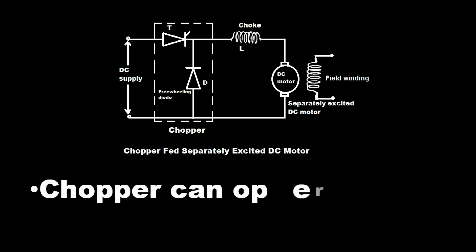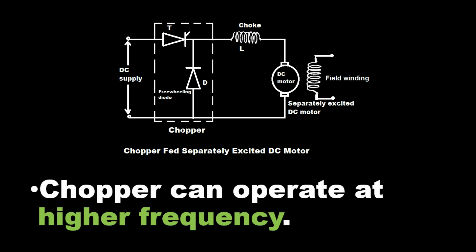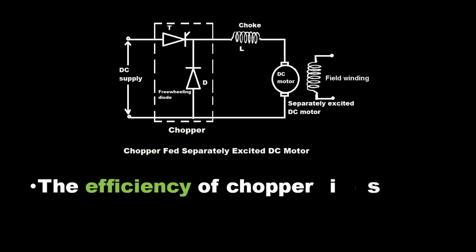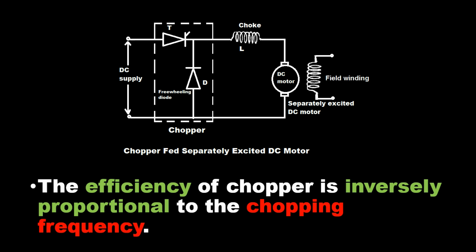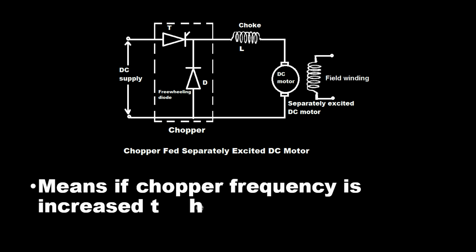Chopper can operate at higher frequency. The efficiency of chopper is inversely proportional to the chopping frequency. Means if chopper frequency is increased then it will decrease the chopper efficiency.